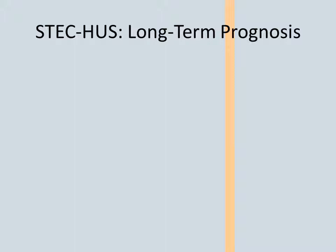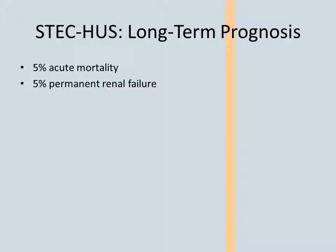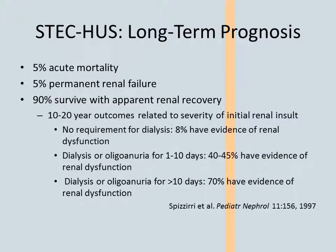With modern supportive care, 5% of children with STEC-HUS die, usually of neurologic complications. Another 5% are left with permanent kidney failure, though they generally do well after kidney transplant. 90% of these children survive with recovery of kidney function. However, we now know that many of these children will develop signs of chronic kidney disease later in life. In young adults aged 20 to 44, the incidence of chronic kidney disease is 0.4%, so even STEC-HUS that does not require dialysis raises this risk 20-fold. The worse the kidney dysfunction, the greater the risk of later chronic kidney disease.